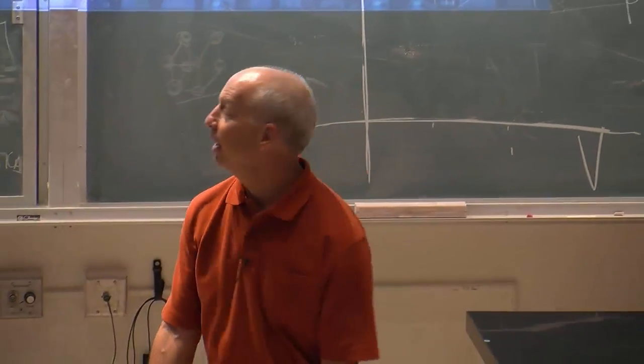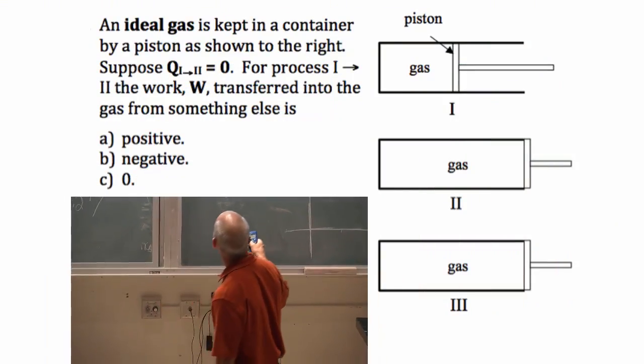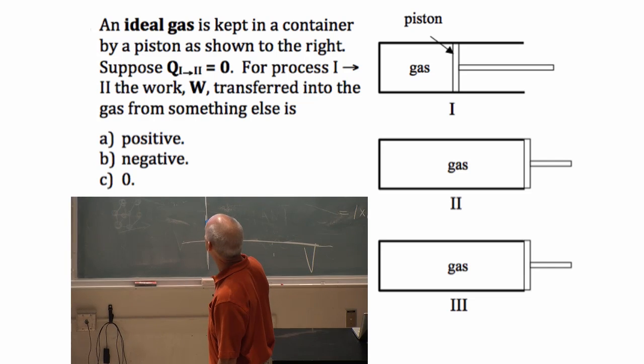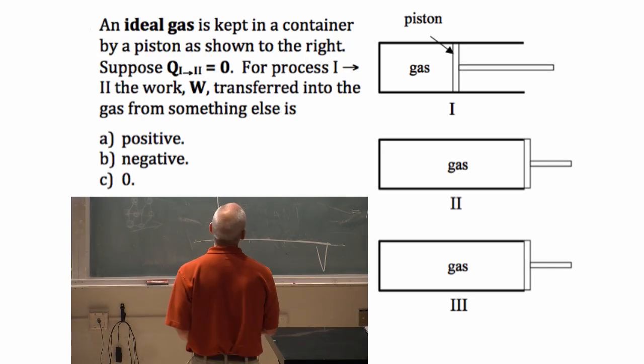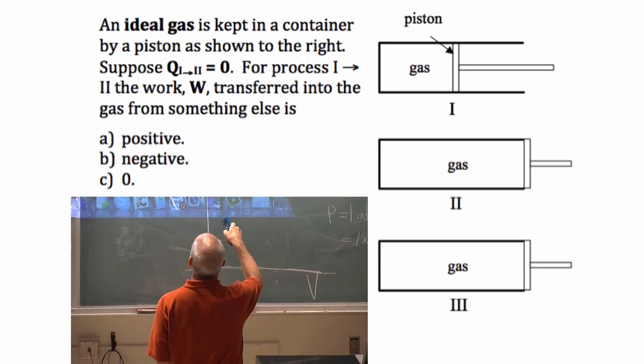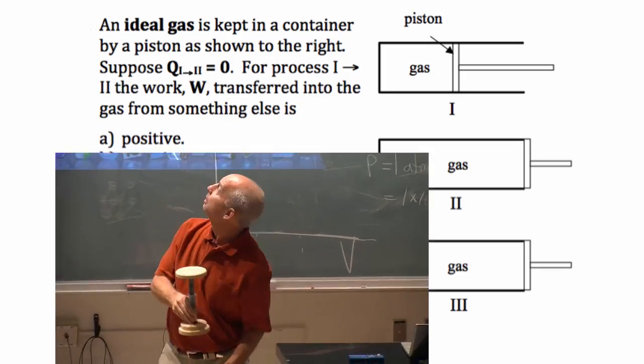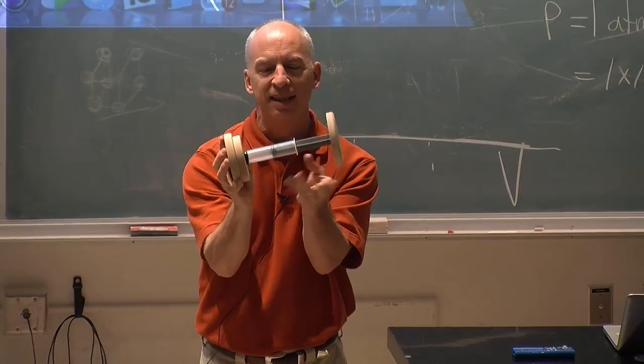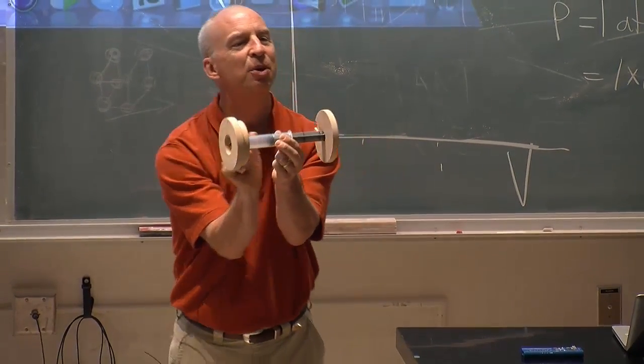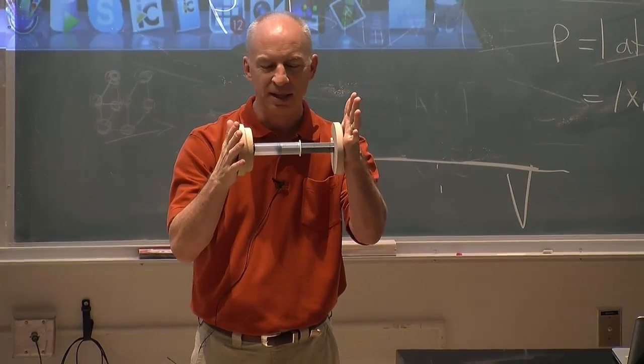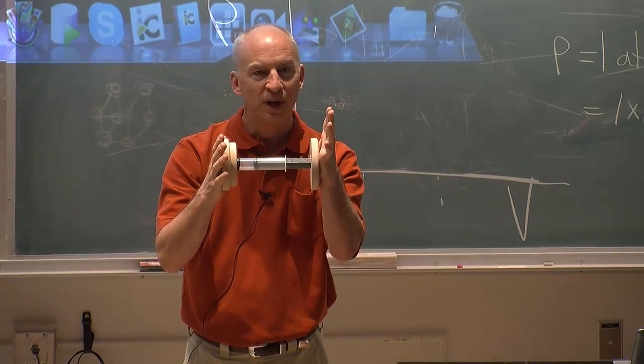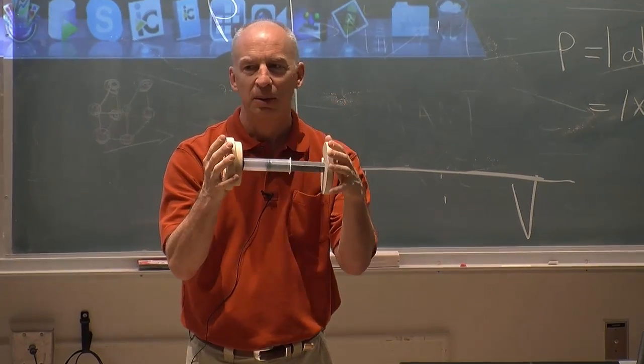So here's the situation: we have a piston and a gas held in a container, like this. The gas is in this syringe right here, here's the piston. The volume could be made smaller or larger.